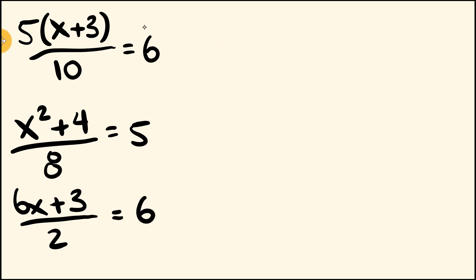Alright, so how did you go? Let's have a look at the first one. We have 5(x plus 3) over 10 equals 6. So starting with our 6 here, we're going to work through and do the opposite. We're going to go 6 multiplied by 10, then divide by 5, subtract 3, and we'll get our answer. So 6 multiplied by 10 is 60, divided by 5 is 12, minus 3, we have x equals 9. How did you go with that one? Good? Cool.